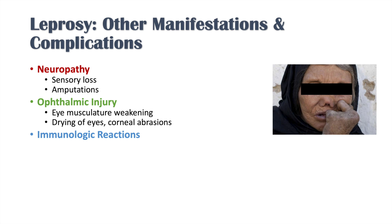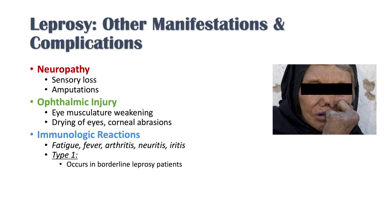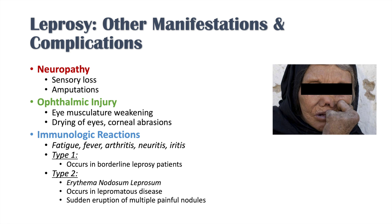Another complication is immunologic reactions, which can include fatigue, fever, arthritis, neuritis, and iritis. Type 1 occurs in borderline leprosy and causes worsening of skin lesions. Type 2, called erythema nodosum leprosum, occurs in lepromatous disease and leads to a sudden eruption of multiple painful nodules.